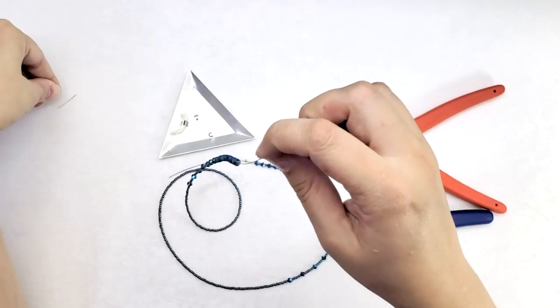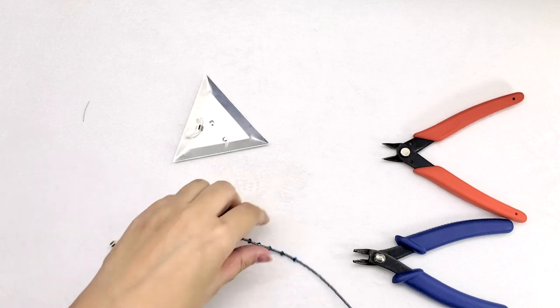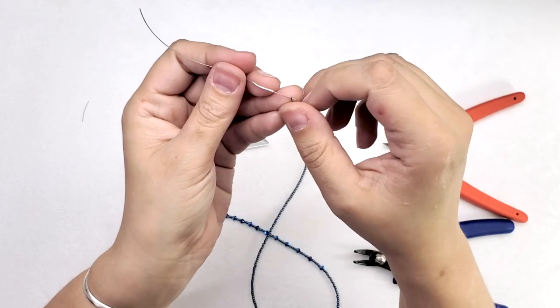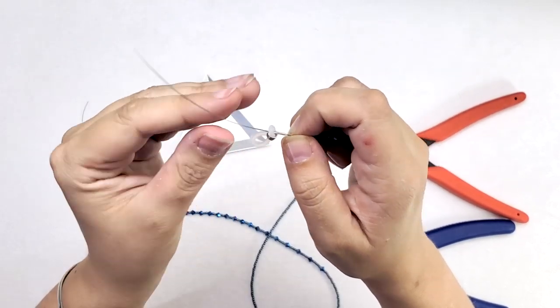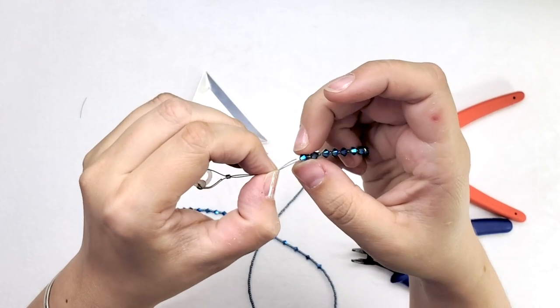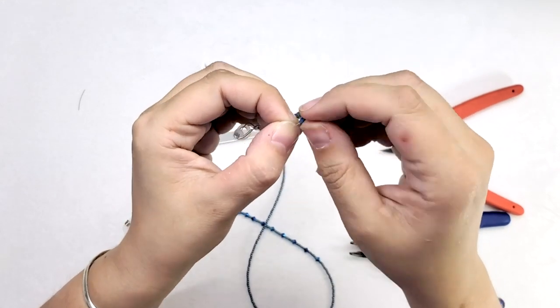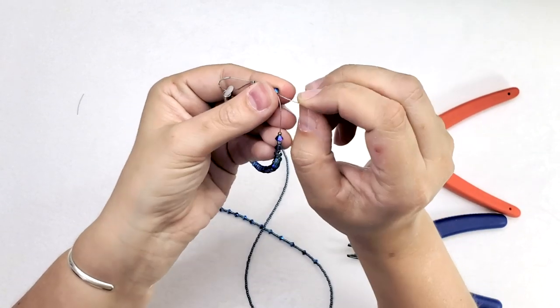And we're going to do the same thing on the other side. Thread our wire through the eyeglass chain finding, back through the crimp bead, and back through that first crystal at the end.